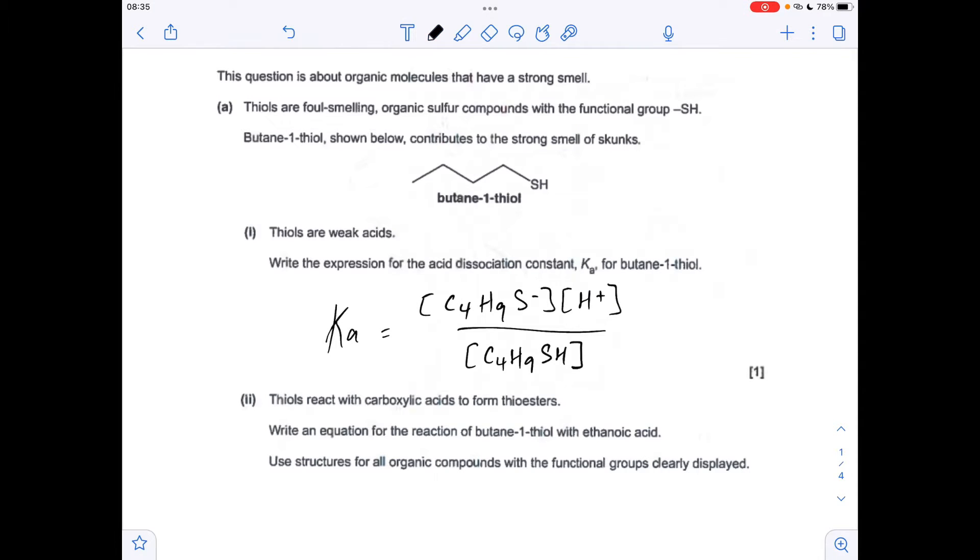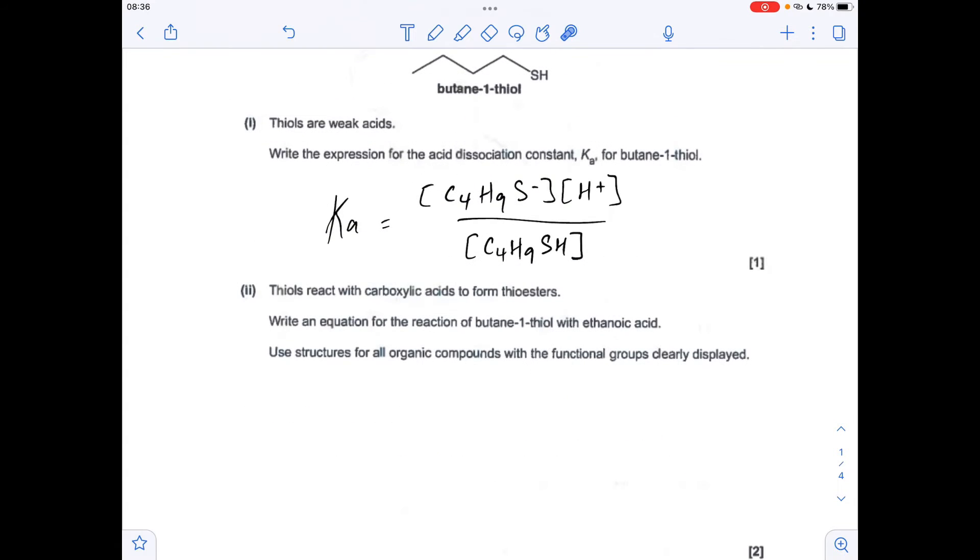Next part, we're told that thiols react with carboxylic acids to form thioesters. So just treat that as an alcohol effectively, but obviously it's not an OH group, it's an SH group. So we're using the OH group from the carboxylic acid, the hydrogen from the thiol group, making a water molecule, and obviously this here is going to be your thioester functional group.